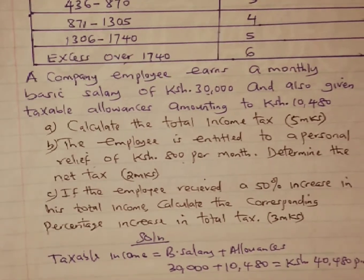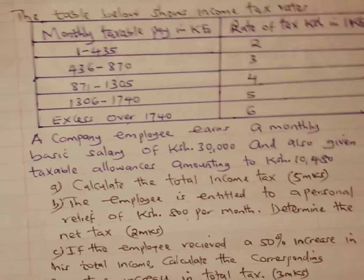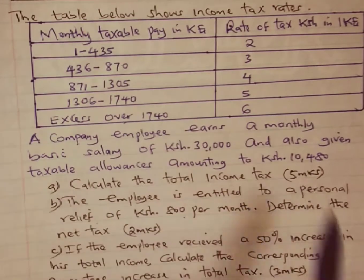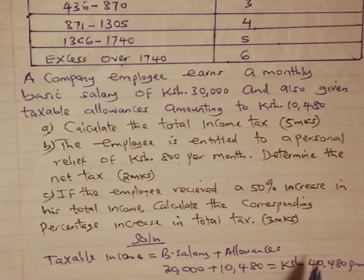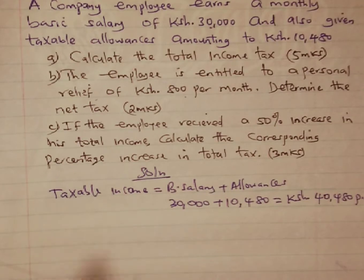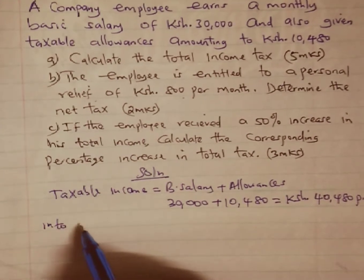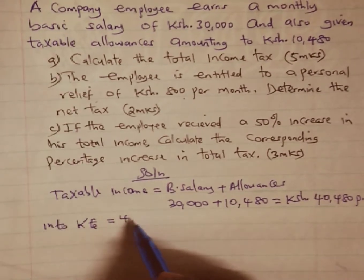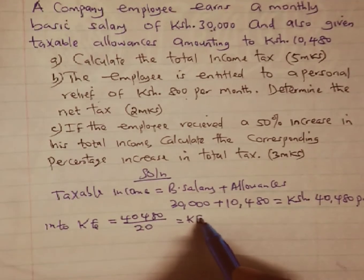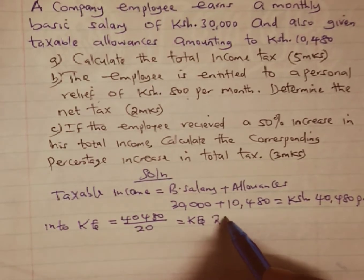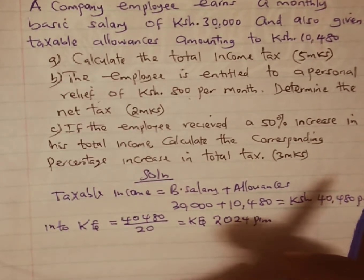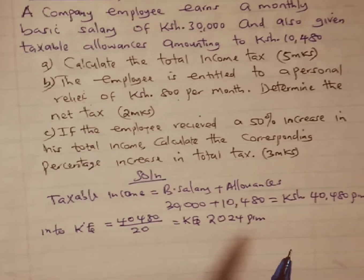We now go to the tax table. Remember the table is in Kenyan pounds per month, but our figure is in Kenyan shillings per month, so we must convert. To convert to Kenyan pounds, we divide 40,480 by 20, giving us Kenyan pounds 2,024 per month as our taxable income.